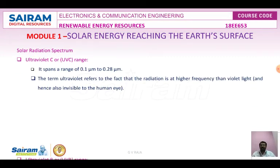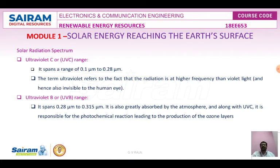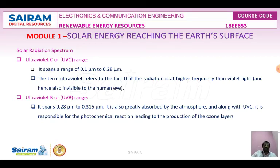Next we look at the solar spectrum. The variation of irradiance with the wavelength of solar radiation is called the solar radiation spectrum. Various amounts of energy are stored in the solar ray spectrum. A spectrum is a collection of waves or signals — characterized by wavelength, frequency, etc. There are five regions in the solar spectrum according to wavelength.